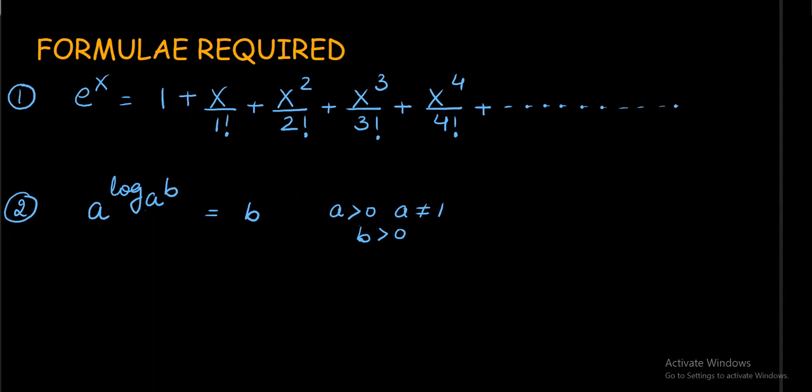The first thing that we are going to see here are the two formulae which I will be using for solving the problem. You can see both are basic formulae. One is the expansion of e^x, the other one is a raised to the power log b to the base a. The important thing is this is the base identical to the base of the log and the answer turns out to be b. Conditions obviously we will have to keep in mind while using this property.